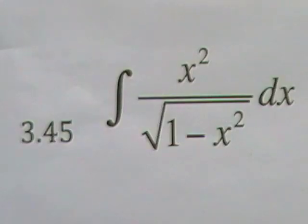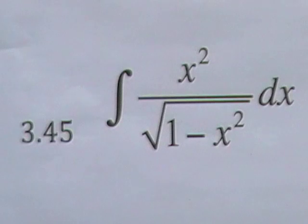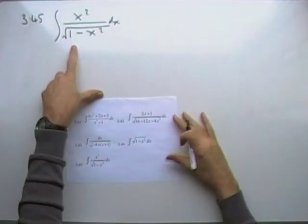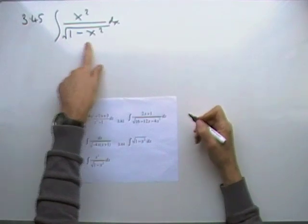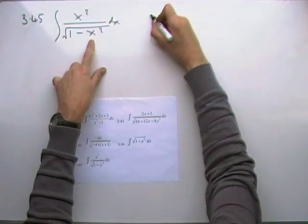Right, number 345 from these. This time you've got what looks like an inverse sine underneath, but unfortunately there isn't an exact derivative on top, so this is also going to require a substitution.